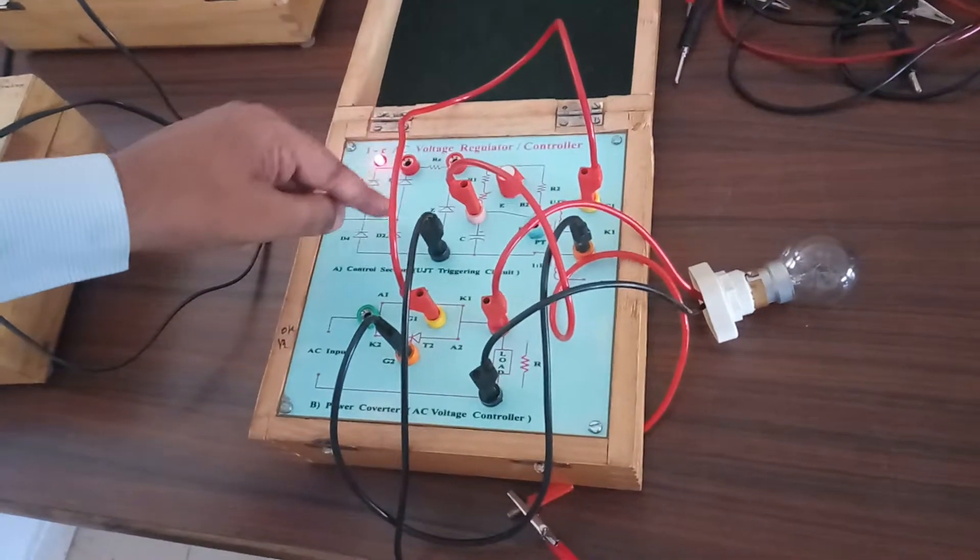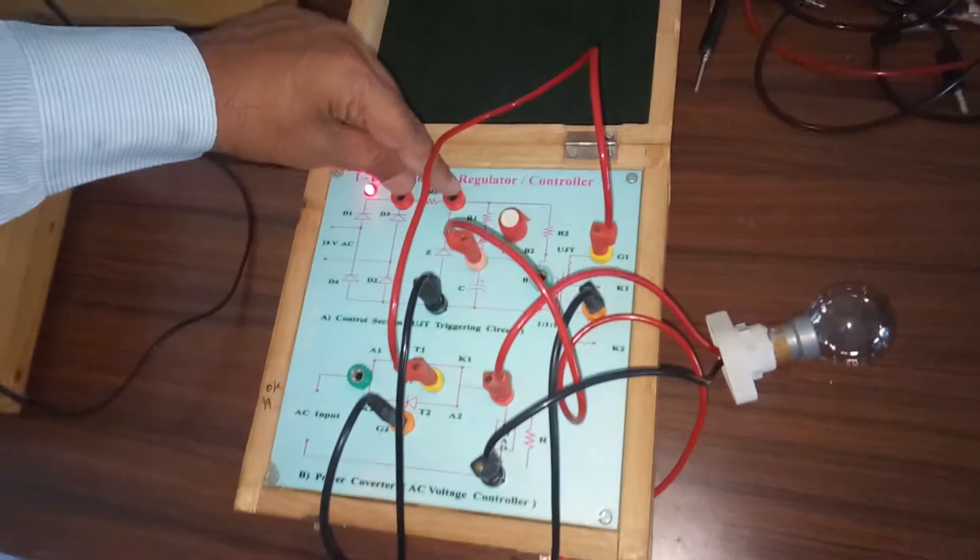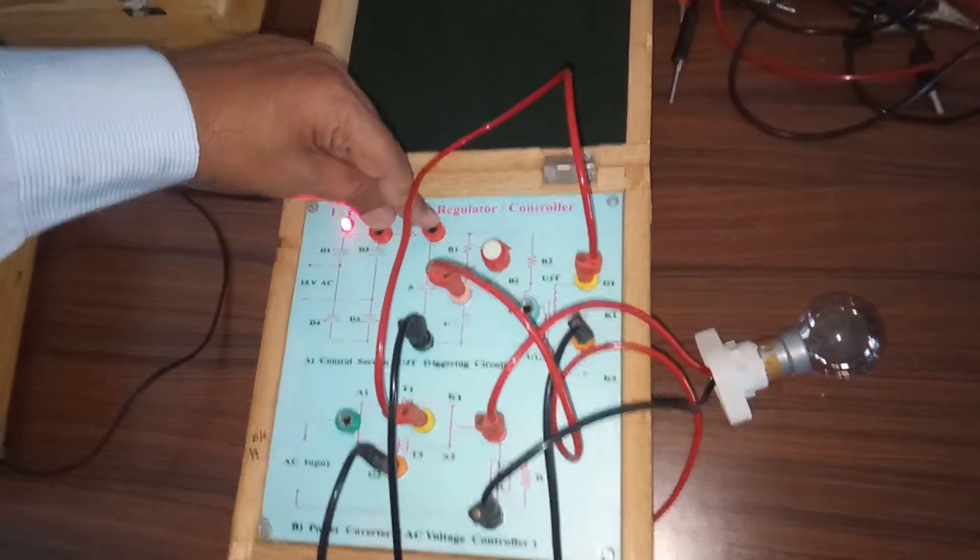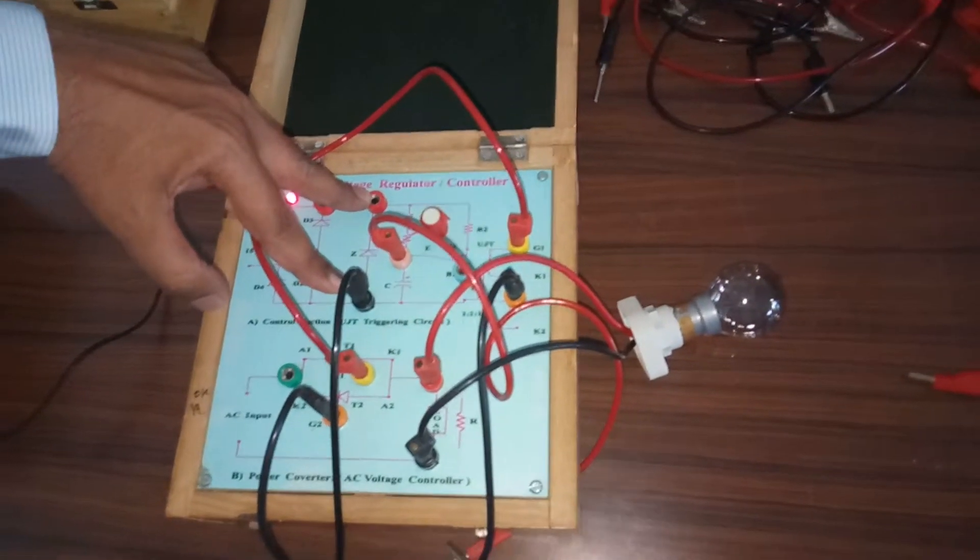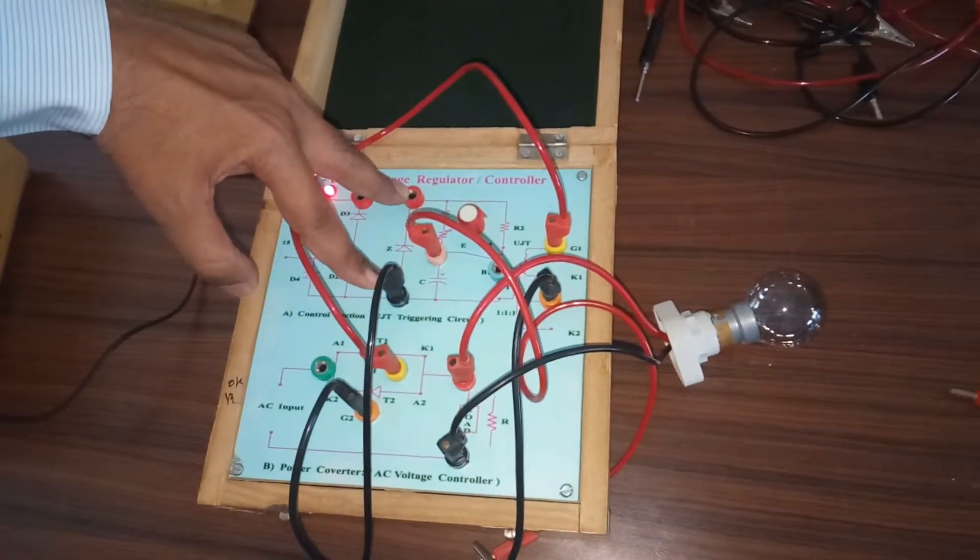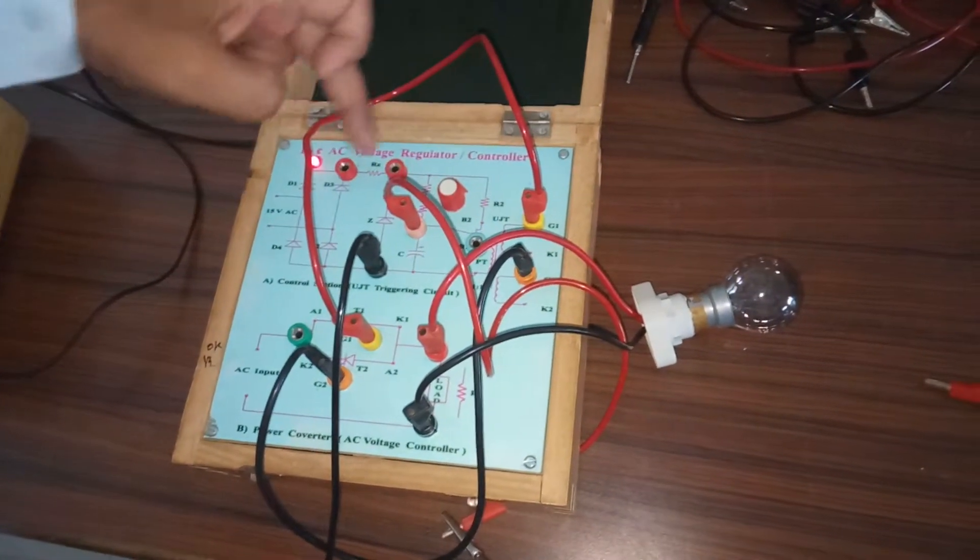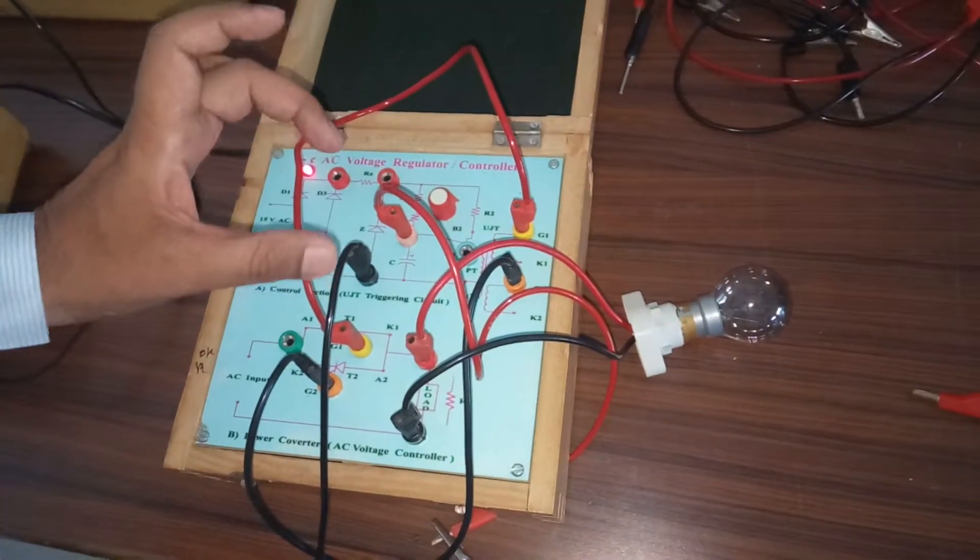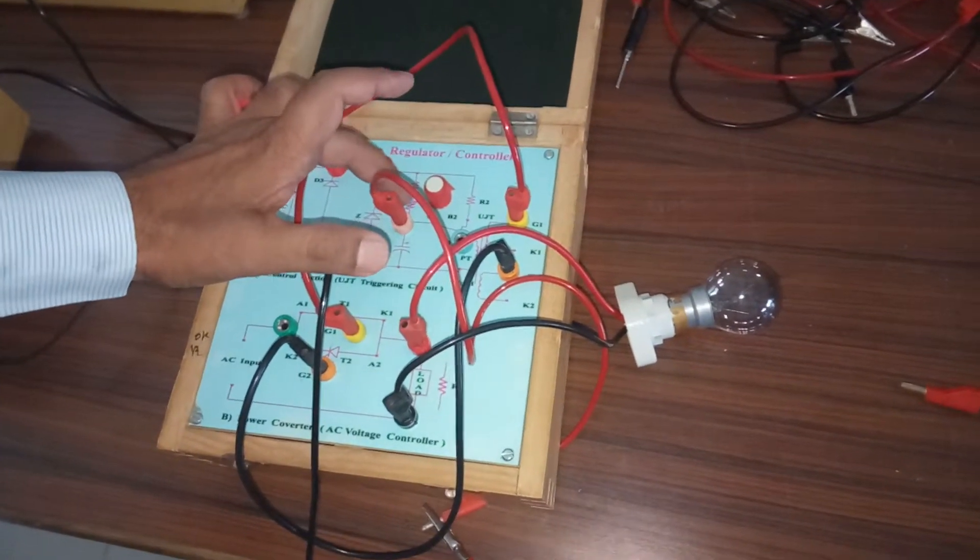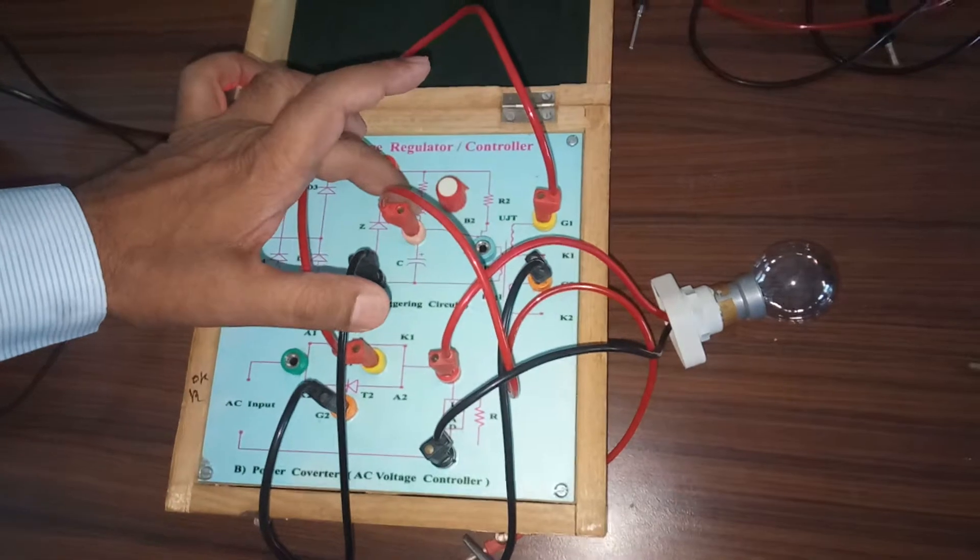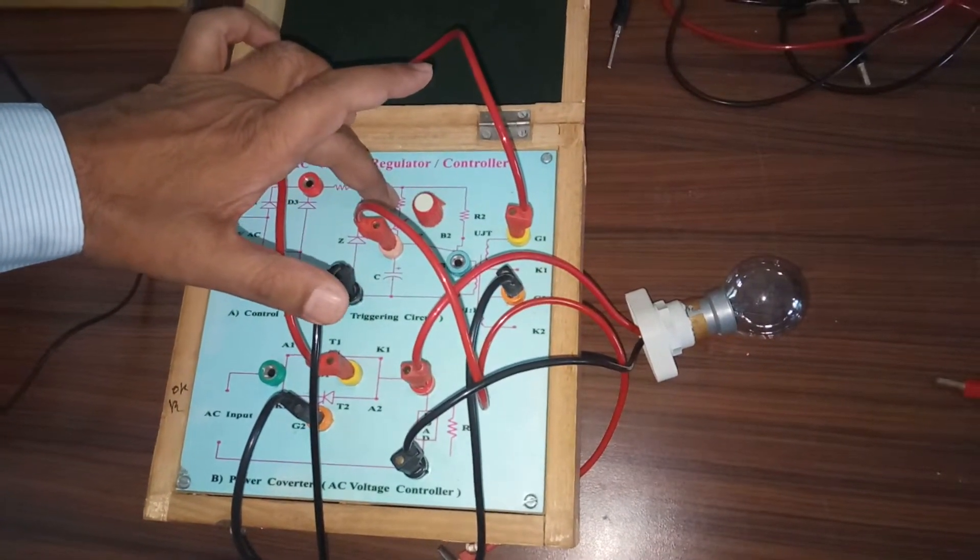So uncontrolled bridge rectifier and output of this, you can observe it across this load resistance. Here we have connected a Zener diode so that you can clip this voltage to a particular level followed by a UJT relaxation oscillator. This capacitor will be charged through this variable resistance R1, variable resistance R and in series with a fixed resistance R1.